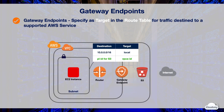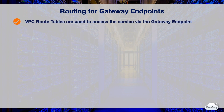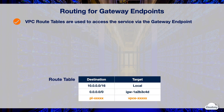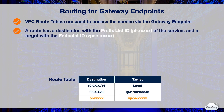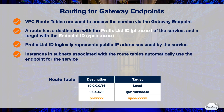A gateway endpoint is a gateway that you specify as a target for a route in your route table for traffic destined to a supported AWS service. Only Amazon S3 and DynamoDB are supported by gateway endpoints. You can create multiple endpoints in a single VPC to multiple services, and multiple endpoints for a single service using different route tables to enforce different access policies from different subnets. When you create or modify a gateway endpoint, you specify the VPC route tables that are used to access the service. A route is automatically added to each of the route tables with a destination that specifies the AWS prefix list ID of the service and a target with the endpoint ID.